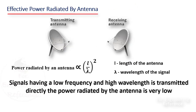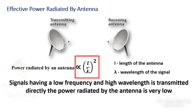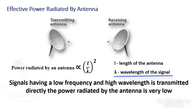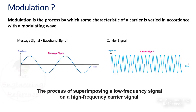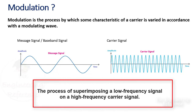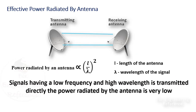Signal power radiated by antenna. Power radiated by an antenna is approximately equal to (L divided by lambda) squared, where L is the length of the antenna and lambda is the wavelength of the signal to be transferred through the antenna. This relation clearly shows that when signals having a low frequency and high wavelength are transmitted directly, the power radiated by the antenna is very low and the signal will vanish after traveling some distance. So the modulation technique is required to transmit such signals over long distances. We superimpose these low-frequency signals over the carrier signal having a high frequency and short wavelength, so that the power radiated by the antenna of the same length will be very large.